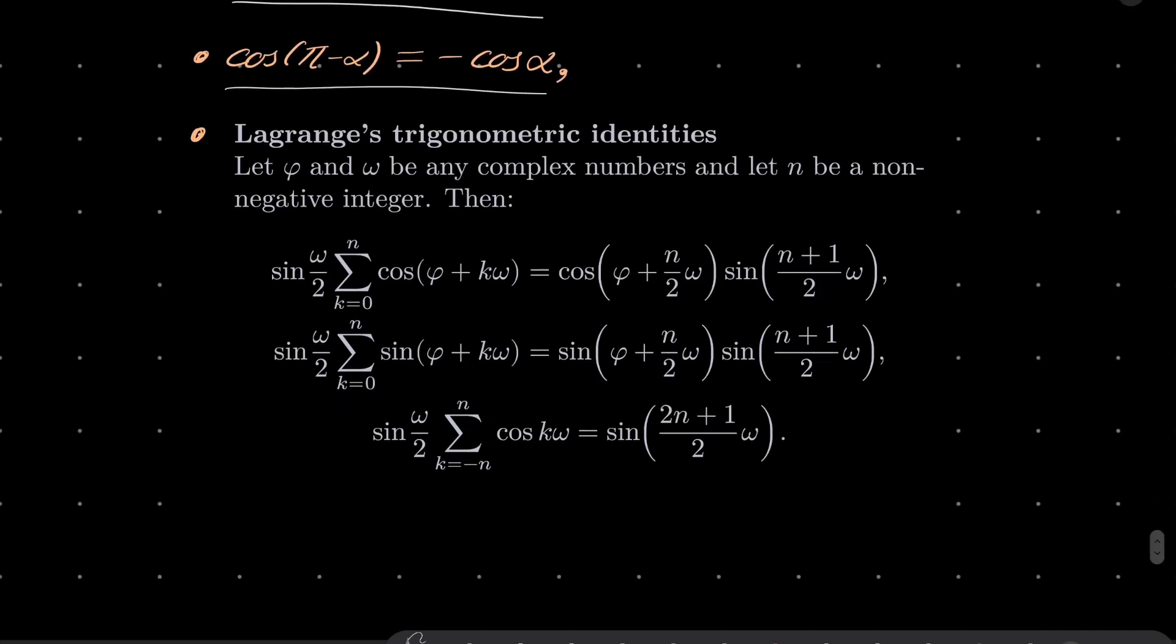We will only use one of them. They are called Lagrange trigonometric identities and they say that for any angles pi and omega, in fact for any complex numbers but doesn't matter, we have the following identities. The first one will be important for us which says that sine of omega over 2 times this sum, cosine of pi plus k times omega equals cosine of pi plus n over 2 omega times sine of n plus 1 over 2 omega.